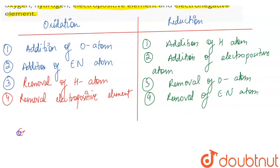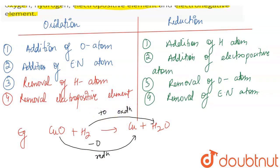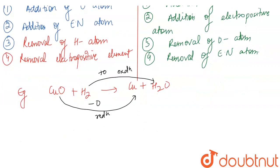Let's take a common example to see oxidation and reduction. Suppose I have taken CuO plus H2. When you react these two, you will get Cu plus H2O. Here you will see that CuO loses oxygen — removal of oxygen is reduction. And H2 gains oxygen, so that is oxidation. In terms of oxygen, we have explained this.